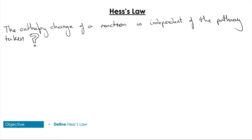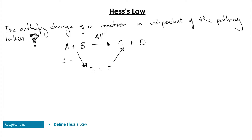If we take a reaction, for example A plus B goes to C plus D, while E and F is known to be formed from A and B and also forms C and D, we end up with this kind of cycle. We know that delta H1, 2, and 3 are all related. In this case, we could say that delta H1 is equal to delta H2 plus delta H3, because if we go from A plus B, we follow the arrow through delta H2 to E and F, and up through delta H3 to C and D, that pathway is going to be equal to delta H1.